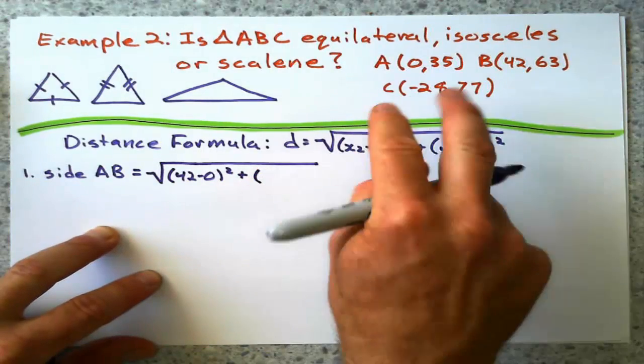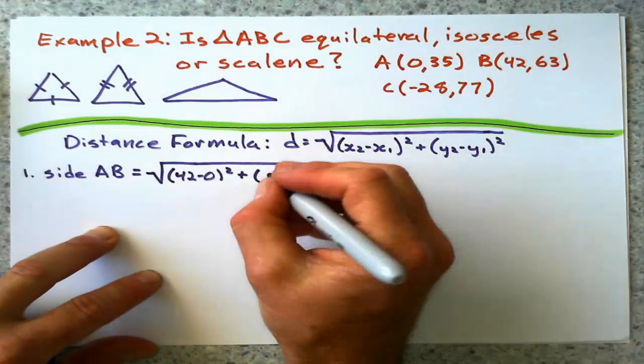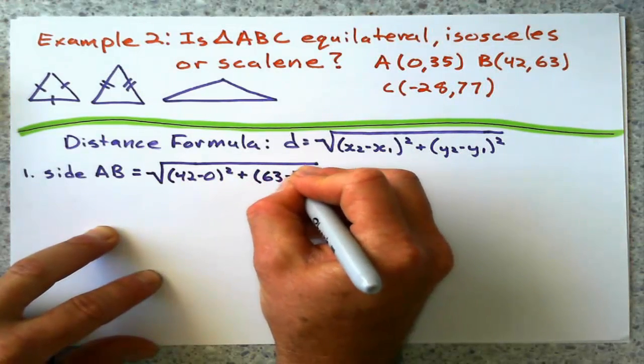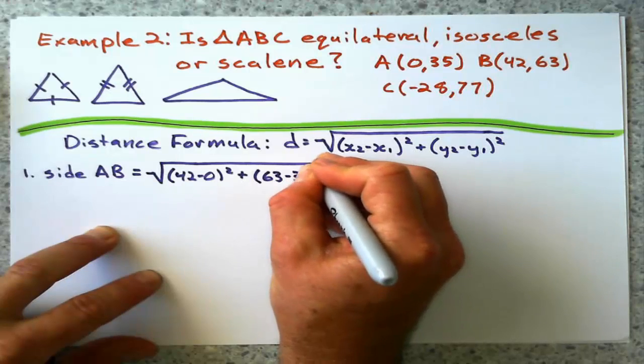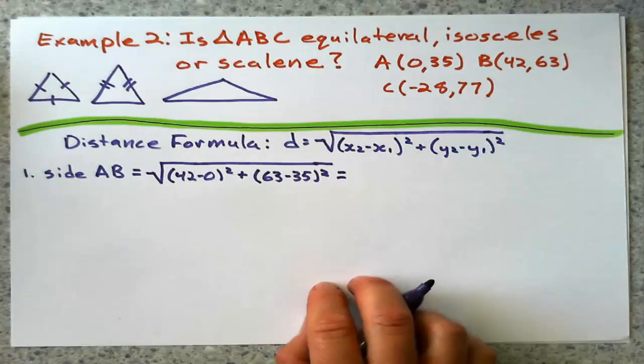plus change in y. For AB, what's the change in y? 63 minus 35. 63 minus 35. And I'm going to square that. I'll work this way. Save space.